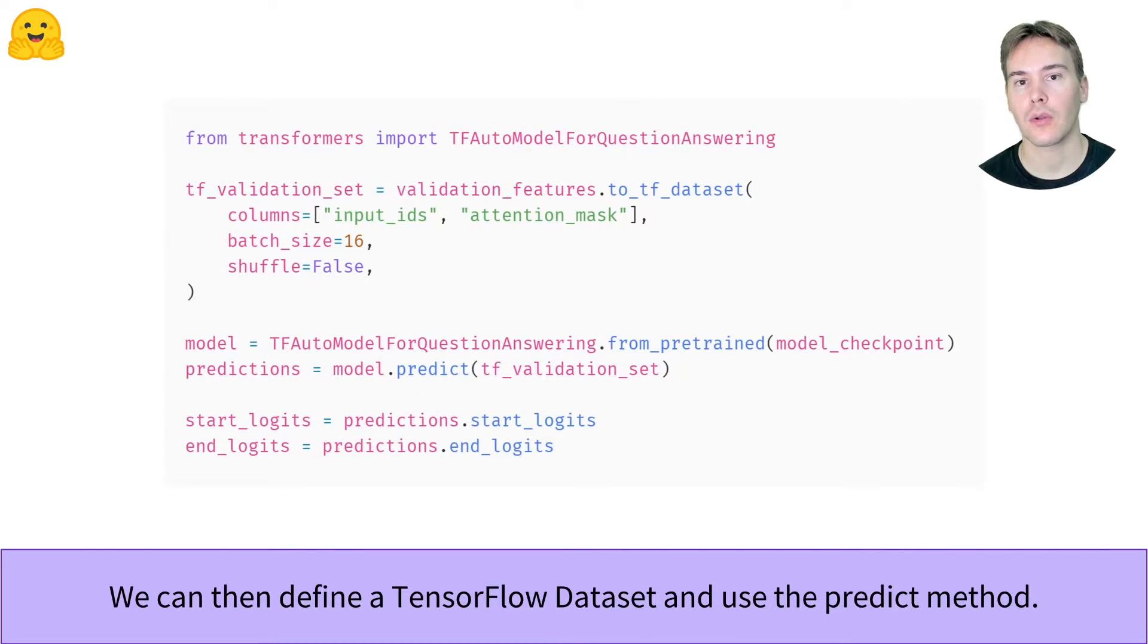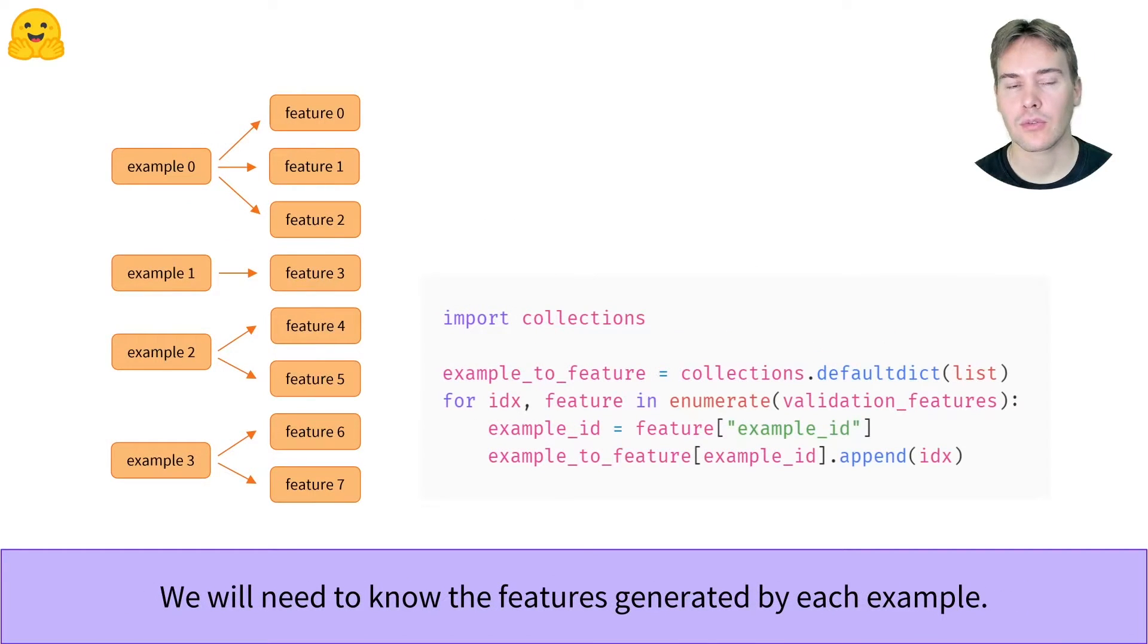We use the default model behind the question answering pipeline here, but you should use any model you want to evaluate. With the to_tf_dataset method, we can just send our processed dataset to model.predict, and we directly get our start and end logits for the whole dataset as NumPy arrays. With this done, we can really dive into the post-processing.